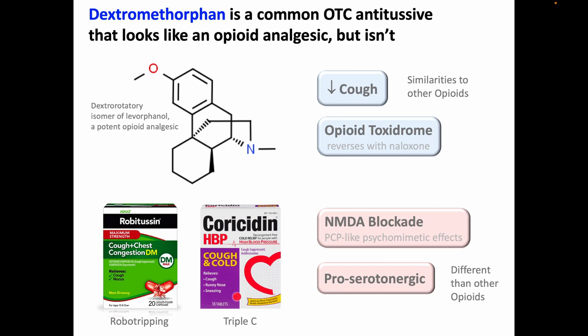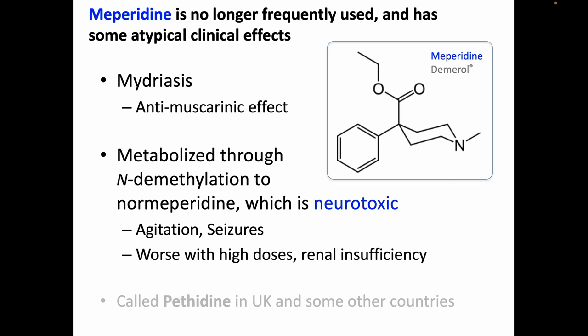Meperidine, or Demerol, is a nearly obsolete opioid that used to be much more popular, but years of patients asking for Demerol by name ultimately led to it falling into disfavor, and it also has some atypical clinical effects for an opioid. Unlike most other opioids, meperidine causes mydriasis — large pupils — rather than miosis. This is due to meperidine's anti-muscarinic effects; part of meperidine's chemical structure actually closely resembles atropine. Meperidine is also converted into a neurotoxic metabolite; high doses, especially in patients with renal insufficiency, can lead to agitation or seizures. And in case you run across it, if you see a reference to an opioid called pethidine, that's what they call meperidine in the UK and some other countries.